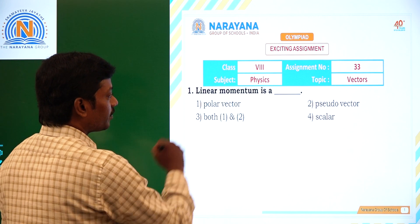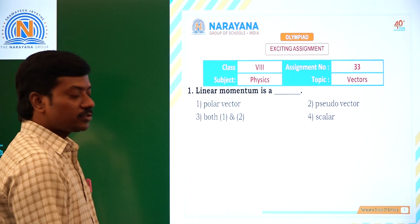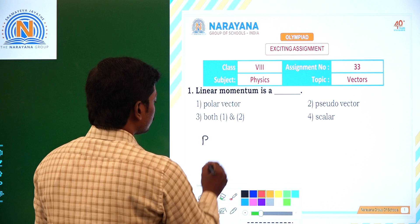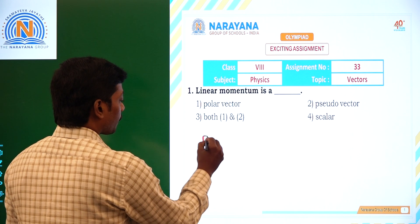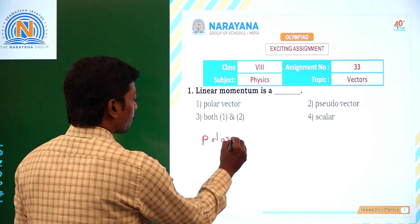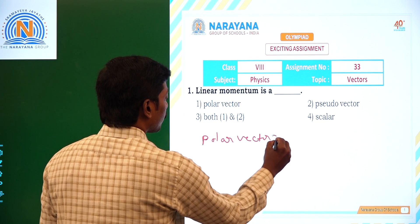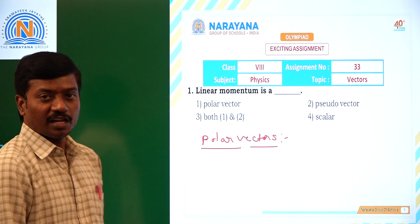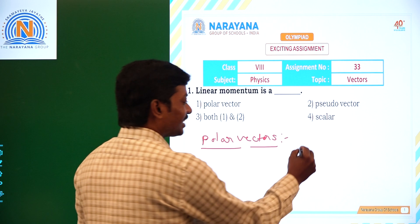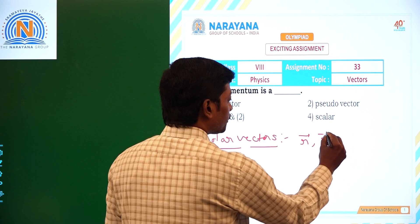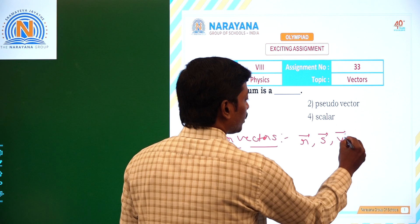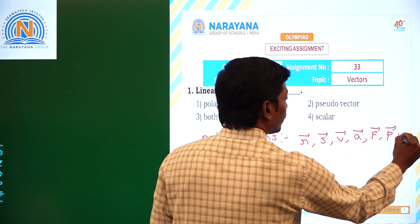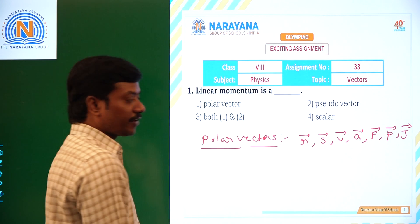First question: Linear momentum is A. So here we have to know two types of vectors. One is polar vector. The vectors which have a translational effect are called polar vectors. Examples: radius vector, displacement vector, velocity vector, acceleration vector, force, linear momentum, impulse. These are all polar vectors.